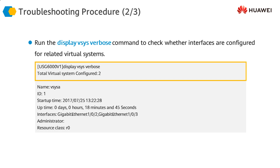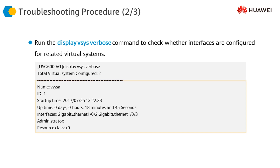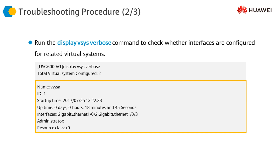Next, we run display vSys verbose to look at the virtual system. We can see that virtual system A has been assigned resource class 0, and the interfaces have been assigned to it — meaning the interface assignment is also appropriate. There is no problem with the interface assignment, so this step is also properly configured.